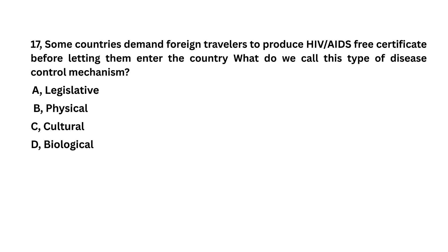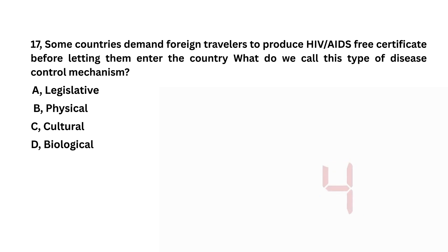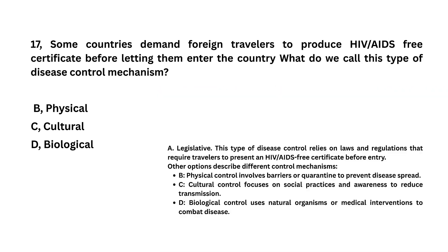Some countries demand foreign travellers to produce HIV-free certificates before letting them enter the country. What do we call this type of disease control mechanism? Legislative, physical, cultural, biological. Legislative is the answer.